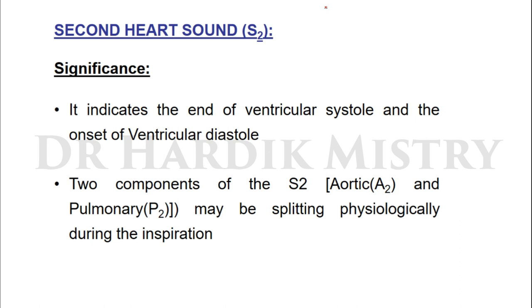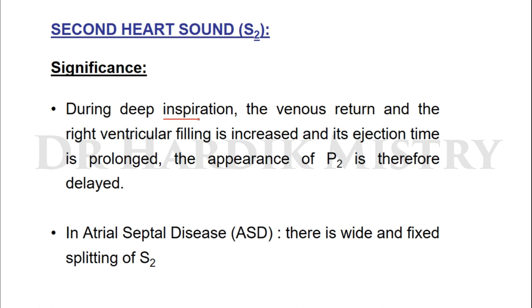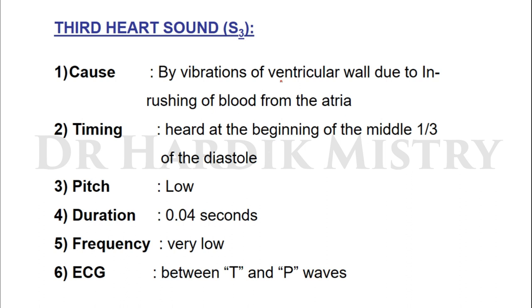The significance of S2: it indicates the end of ventricular systole and the onset of ventricular diastole. S2 has two components: the aortic component A2 and the pulmonary component P2. During deep inspiration, venous return and right ventricular filling are increased and ejection time is prolonged, so P2 is delayed — this is the reason for physiological splitting of S2. In atrial septal defect there is wide and fixed splitting of the second heart sound.